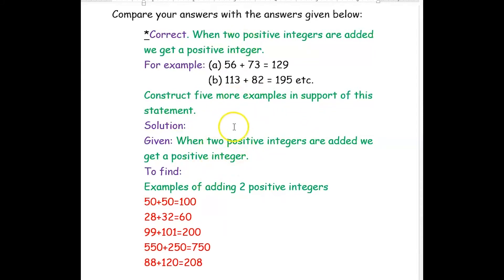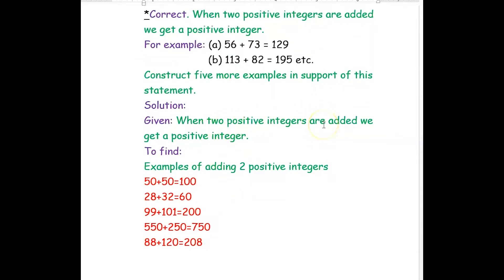We have to write examples where two positive integers are added and the result is also a positive integer. For example, 50 plus 50 gives 100 — 50 is a positive integer, adding another positive integer 50 gives a positive result. Next, 28 plus 32: 28 is positive, 32 is positive, so the result is positive 60.